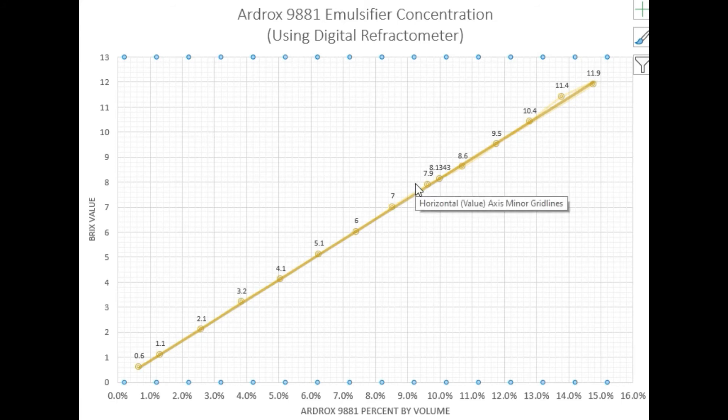In this axis we have the Brix value. In this other axis we have the percent by volume. That means the volume of emulsifier that we have per volume of water.